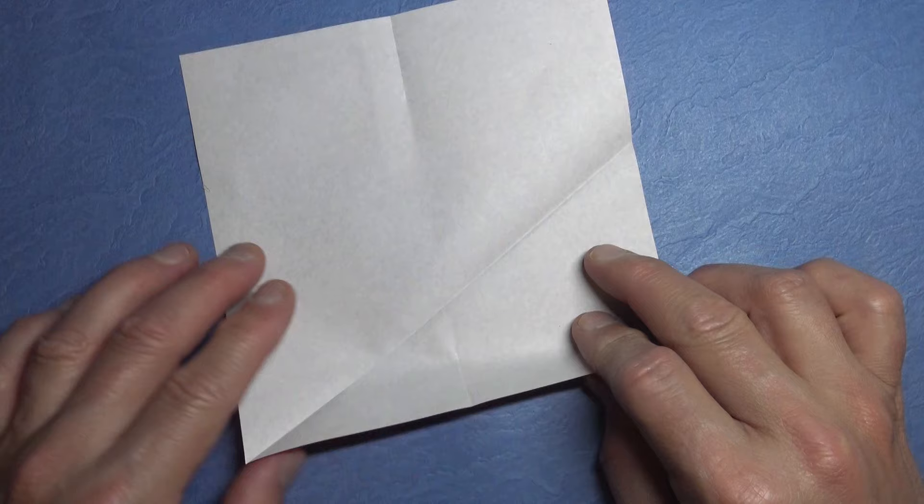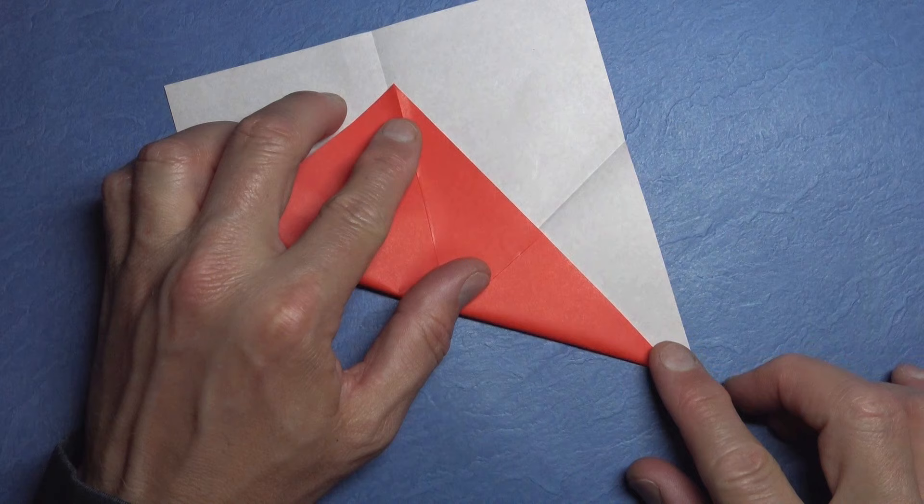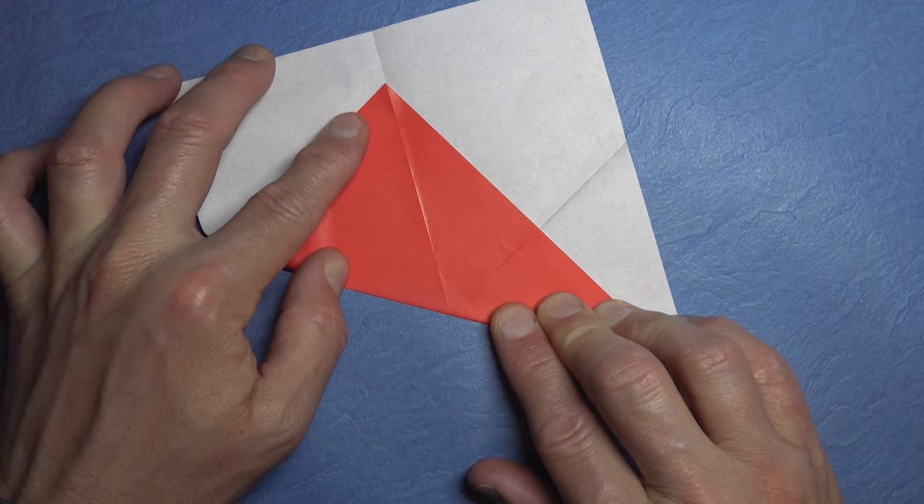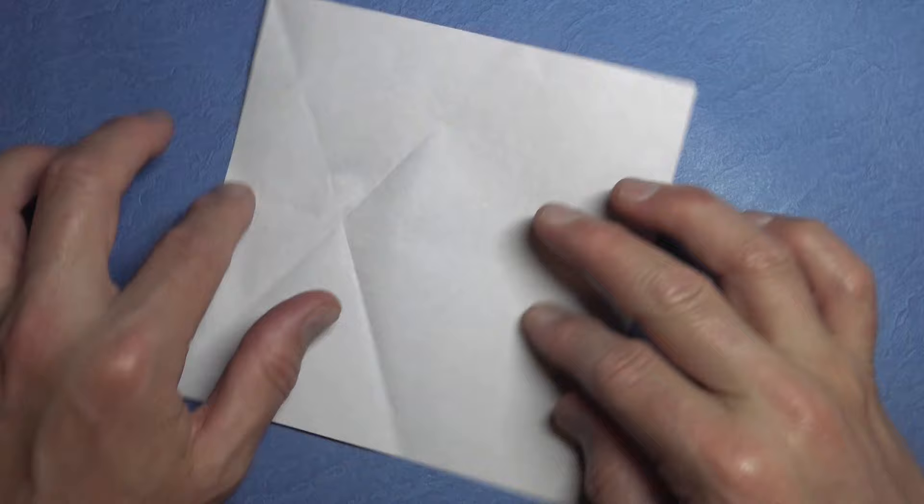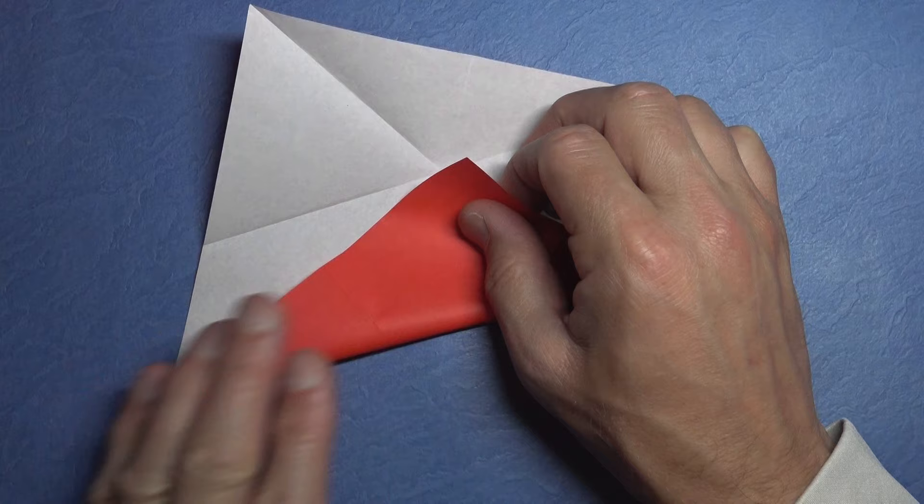Unfold and now fold this corner to the crease, and the fold originates at this corner, and fold all the way across. Unfold, rotate, and repeat on this side. There's the crease.